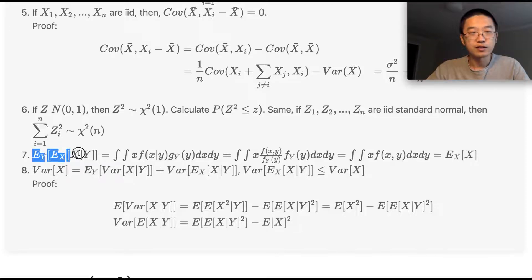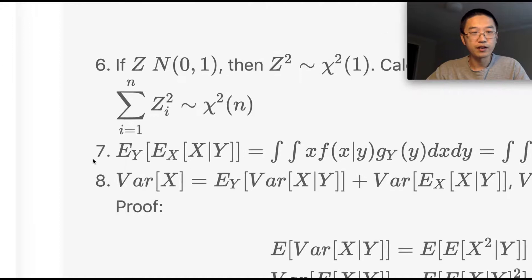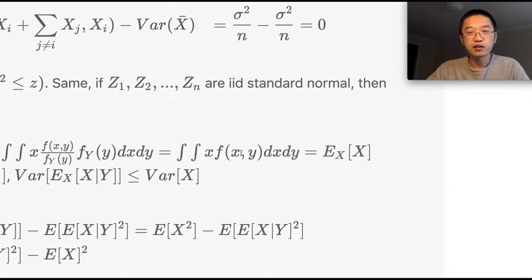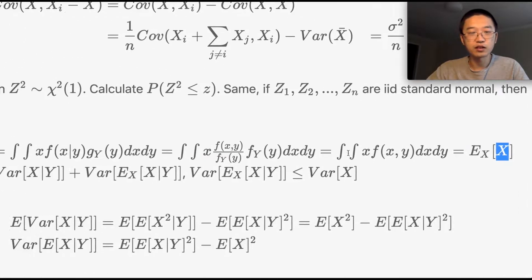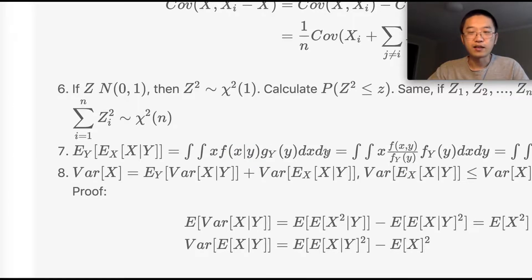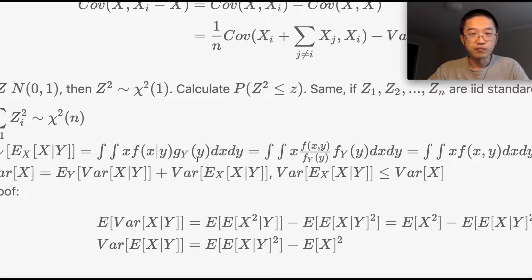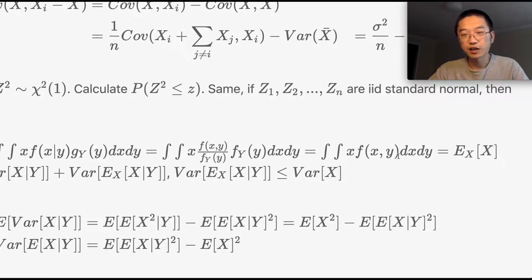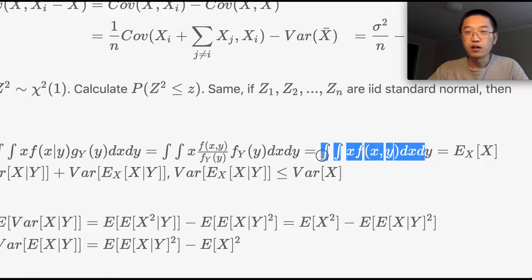Next is an interesting result: E[E[X|Y]] = E[X]. To prove this, write down the integral of E[X|Y] times the PDF of Y, then expand using f(X|Y) = f(X,Y)/f(Y). The f(Y) cancels out and you're left with X times f(X,Y), which by integration is just the definition of E[X].